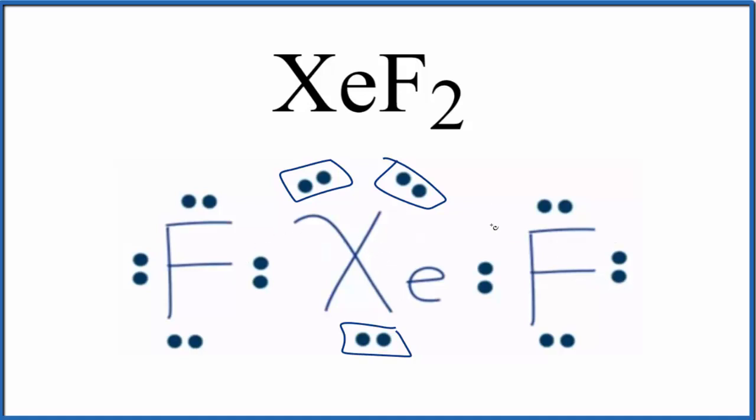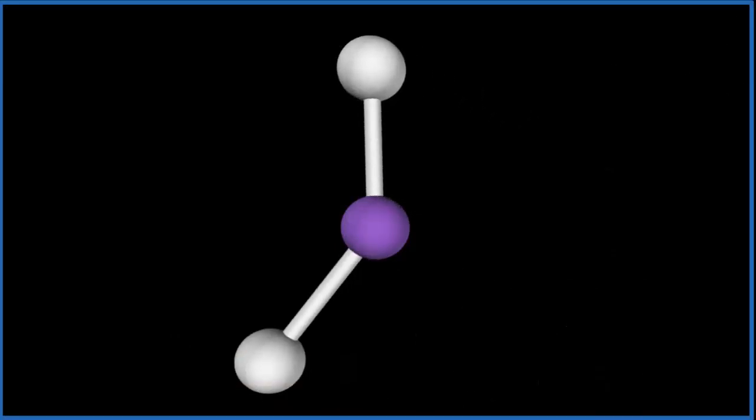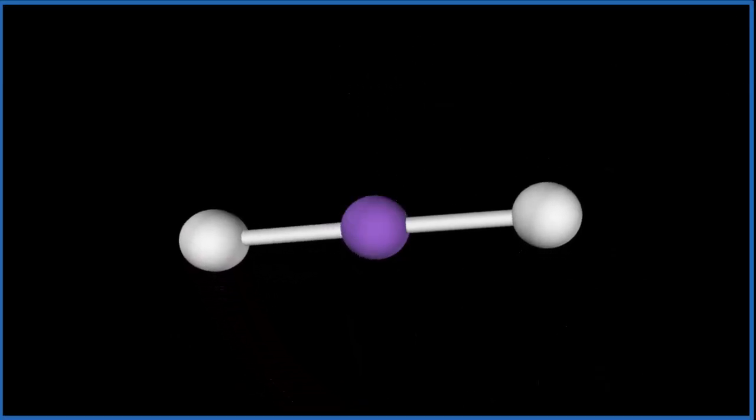Let's look at the molecular geometry for a minute just to see how these lone pairs influence the shape of the molecule. So the purple, that's our central xenon atom. We'll add our two fluorine atoms. They spread out as far away as they can from each other.